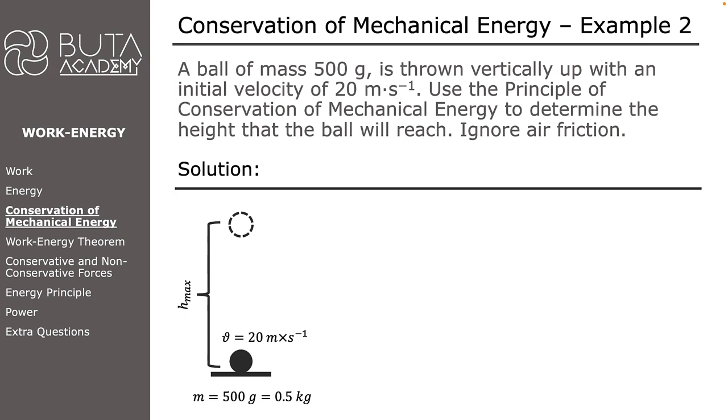The ball has two important positions for us. The first one is when it is at ground level. It is important because all of the information in the question is related to this point. The second position indicates the ball's maximum height, since we need to calculate this height.